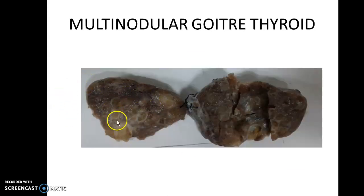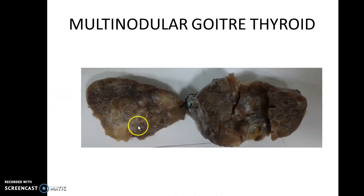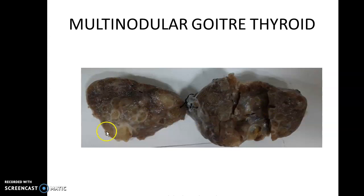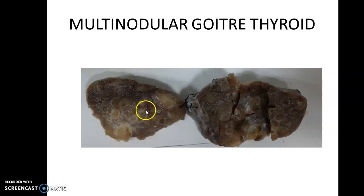Here is a specimen of thyroid. What you find here is multinodular lesions with glistening areas — these glistening areas are the normal areas. You can also have hemorrhage here. This is a simple colloid goiter with lots of nodules and cystic spaces.